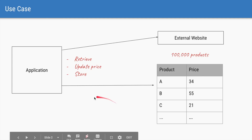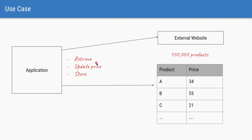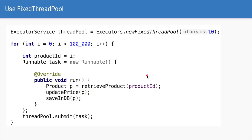Let's say we have an application where we want to get 100,000 products from an external website. That is, we need to make an HTTP call to get each of the products. Once we get the product, we need to update the price using some algorithm and store that product to the database.